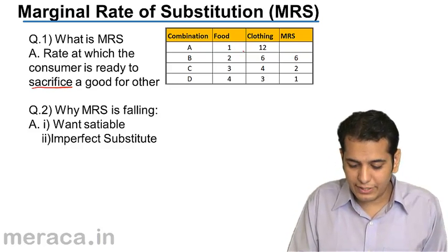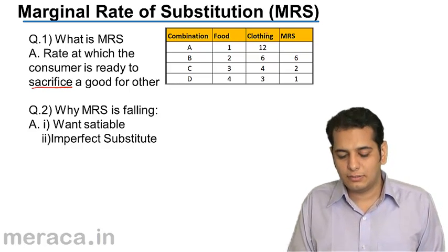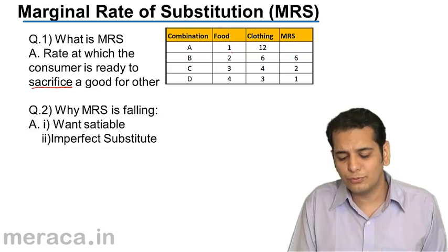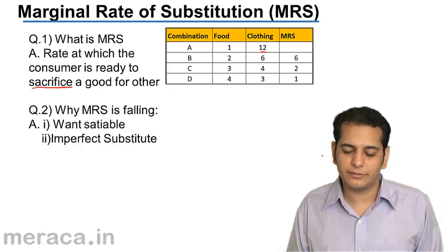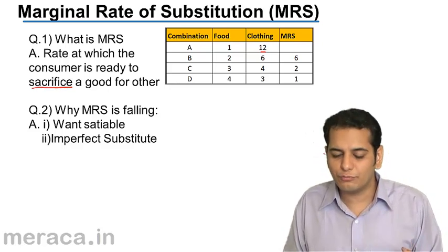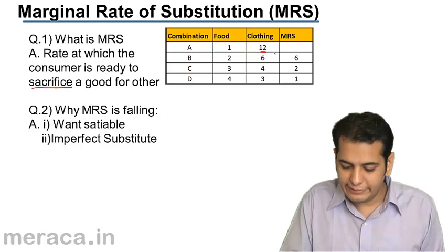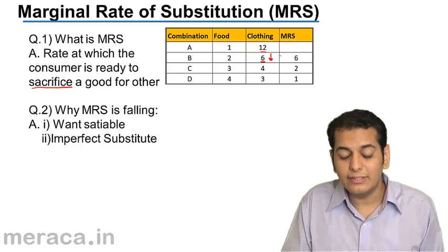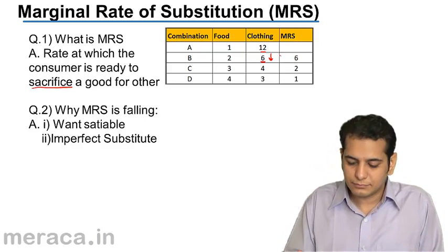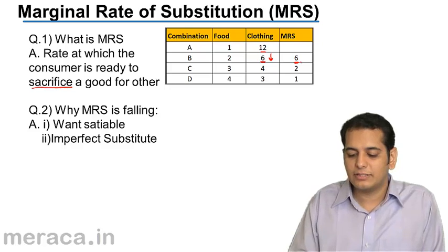In this case, there are two goods: food and clothing. At combination A, the consumer has one unit of food and 12 units of clothing. Now when the consumer wants to increase the quantity of food from one to two, he sacrifices — he gives away six units of clothing. So we can say that at combination B, the MRS is six.